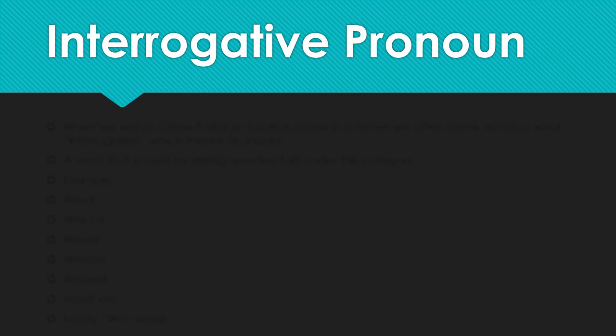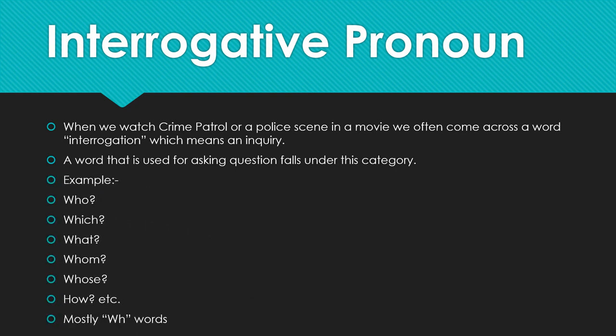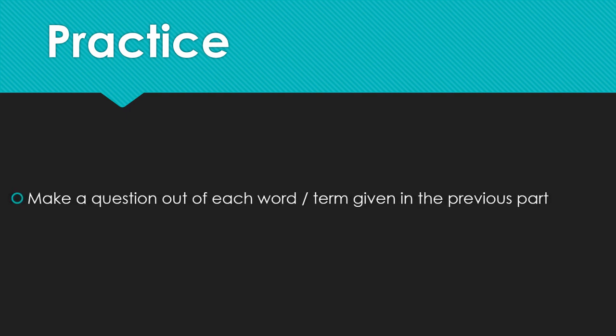Interrogative pronoun — interrogation means inquiry or questioning, like police investigations. A word that is used for asking questions falls under this category. Examples: who, which, what, whom, whose, how. There are two alphabets common in almost all these words — a trick to memorize these WH words for interrogative pronoun. Enjoy making a questionnaire either for your friend or family member — write down questions whatever you wish to ask anybody.